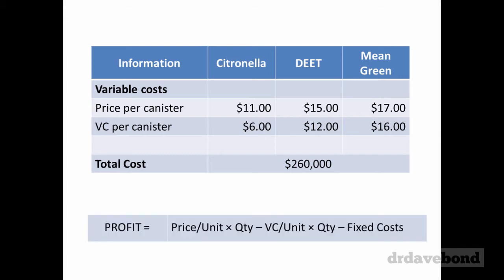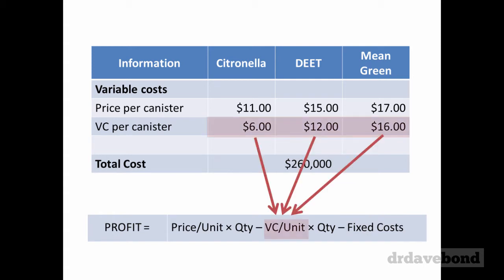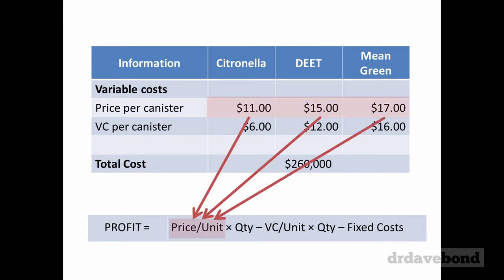With the setup we have at the moment — profit equals price per unit times quantity minus variable cost per unit times quantity minus fixed costs — the fixed costs are easy, that goes down into fixed costs. The problem is we have three variable costs per canister and three prices per canister. How do we load them all into this equation when we only have one set of fixed costs running across all of those products?